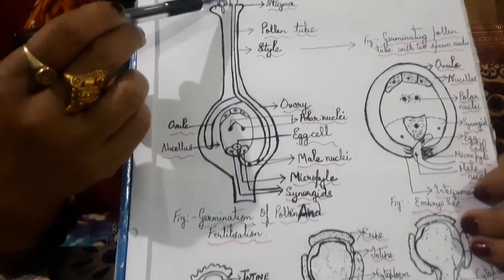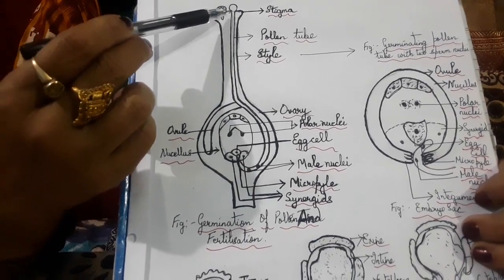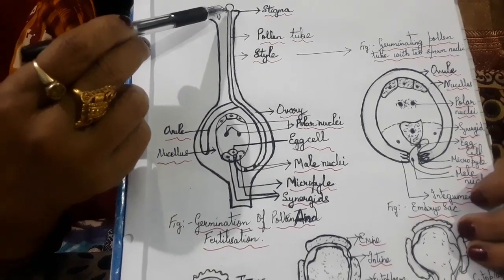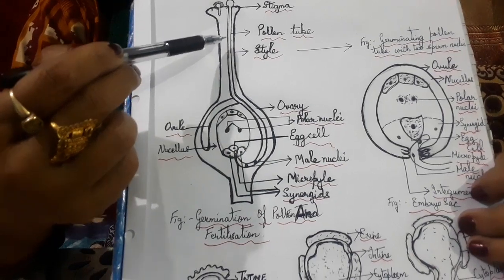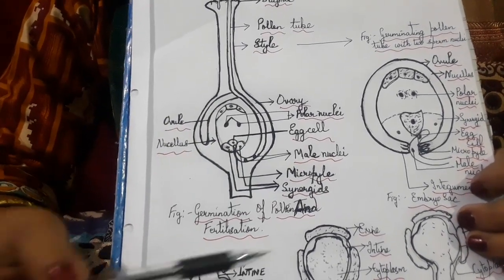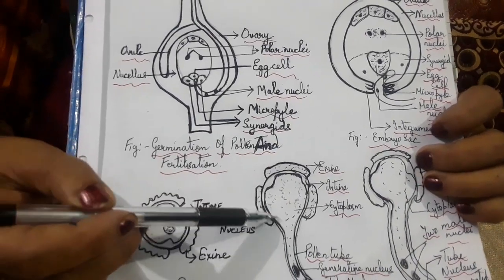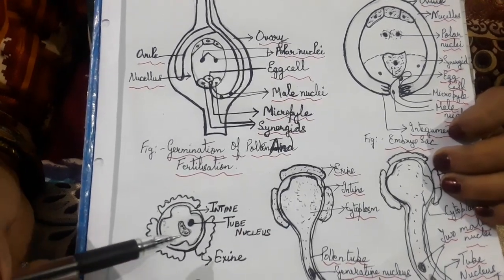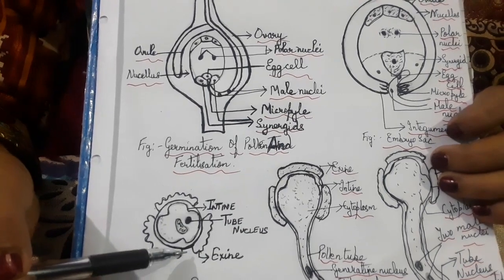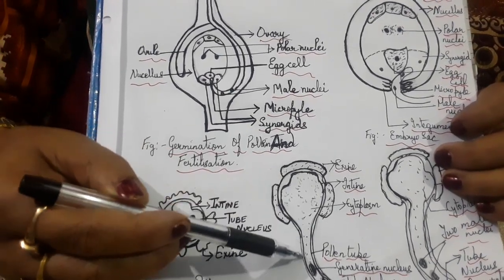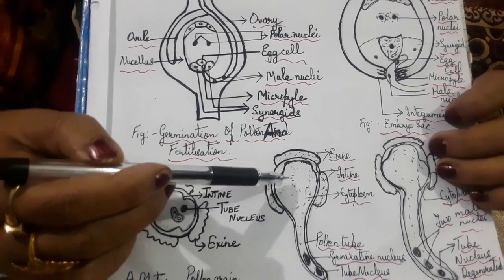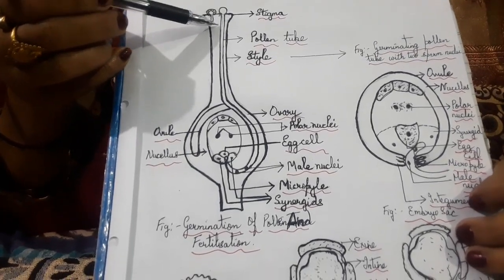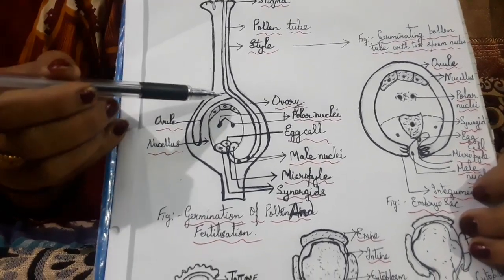After the pollen grains germinate, this part is the stigma, style, and ovary. The pollen grains after germinating form an elongated pollen tube. The entine pours out and forms a tube-like structure. How is it possible? There are pores in between the exine — it is not continuous — so through these pores or germ pores, the entine forms a tube-like structure along with the nucleus. The pollen grain, as it forms a pollen tube, starts moving towards the ovary.